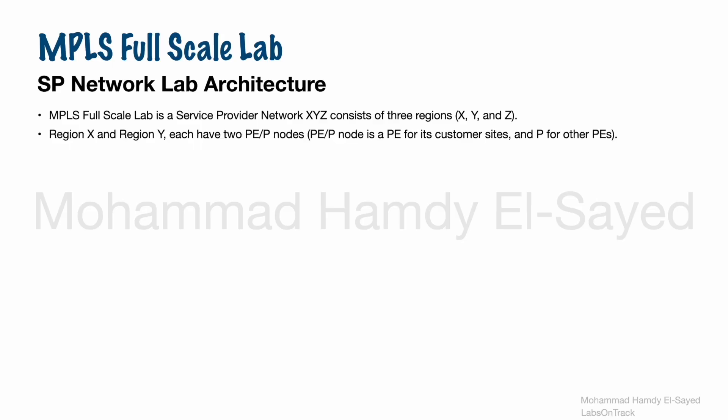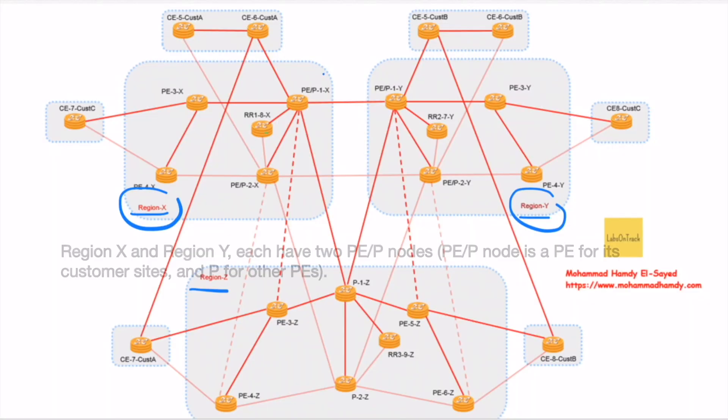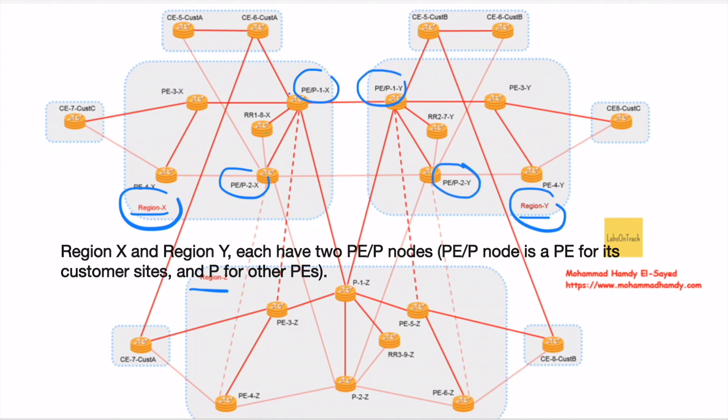Region X and region Y are identical. They have two routers functioning as PEP routers. They have two roles: PEP router for its connected customer routers and P router for its PE routers that are connected to it.